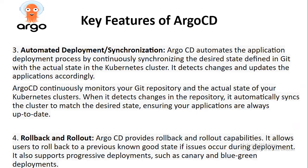The next key feature is automated deployment and synchronization. ArgoCD continuously monitors your Git repository and the actual state of your Kubernetes cluster. When it detects changes in the repository, it automatically syncs to the cluster to match the desired state, ensuring your applications are always up to date. Another key feature is rollback and rollout: ArgoCD provides rollback and rollout capabilities, allowing users to rollback to a previous known good state if issues occur during deployment, and it supports progressive deployments such as canary and blue-green deployments.